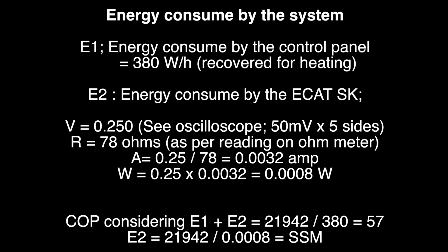As you can see, the COP, considering both the energy that is consumed by the cooling system plus the energy that is consumed by the ECAT, we have 21,942 watt hours per hour produced divided by 380 watt hours per hour consumed, and we have a coefficient of performance of 57.